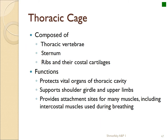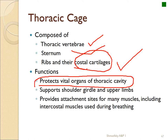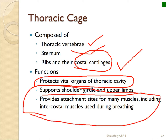Now let's finish with the thoracic cage, made up of the upper thoracic vertebrae, the sternum, the ribs, and their costal cartilages. The function of the thoracic cage is protection and support of the lungs and heart, support of the shoulder girdle — though not directly attached — and attachment sites for many muscles, particularly those associated with breathing.